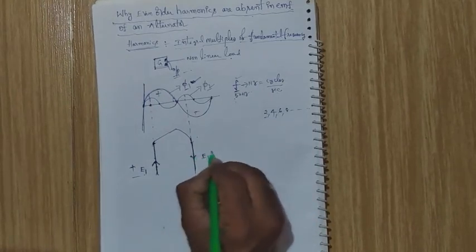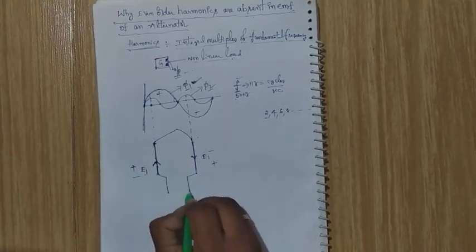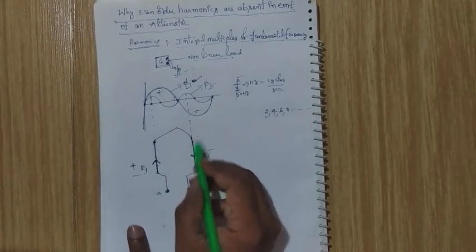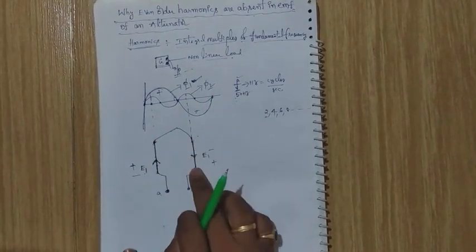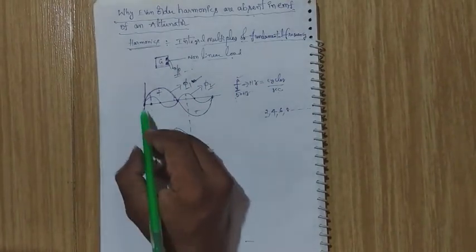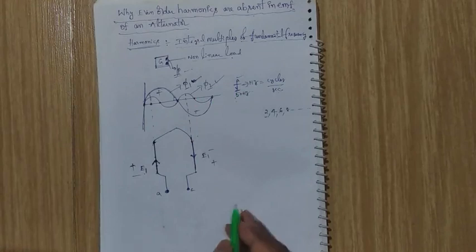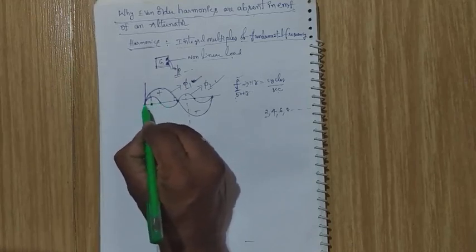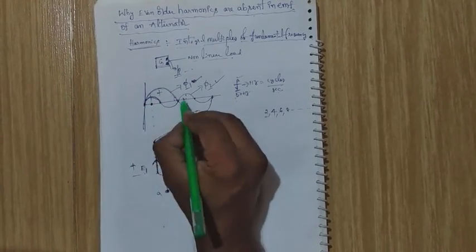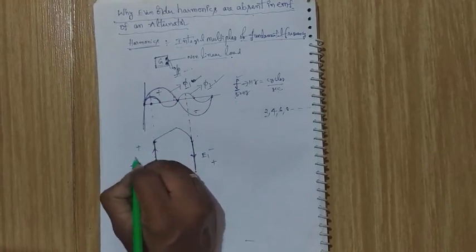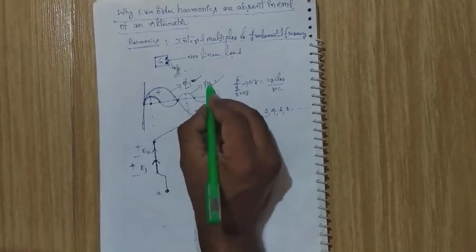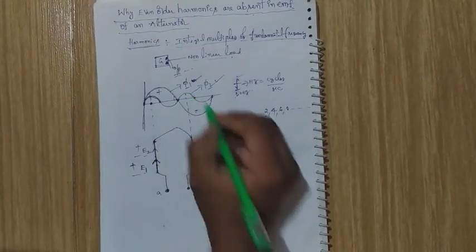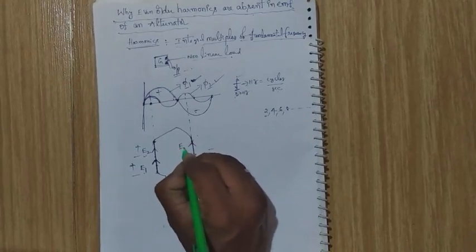So here the polarity is minus-plus. These are the terminals — terminal A and terminal C. Due to Faraday's law, EMF e₁ is induced on coil side one in the upward direction, and EMF e₁ is also induced on coil side two in the downward direction — this is for the fundamental flux wave Pi₁. Now considering the second harmonic flux wave Pi₂: this conductor again cuts Pi₂ at the same instant, and here both half cycles are positive. So the induced EMF is e₂, with polarity plus-minus, and current direction is upward.